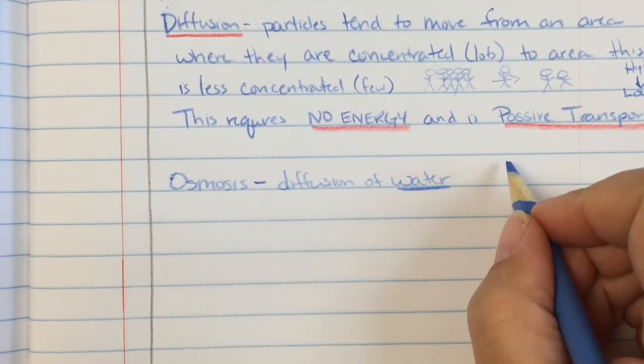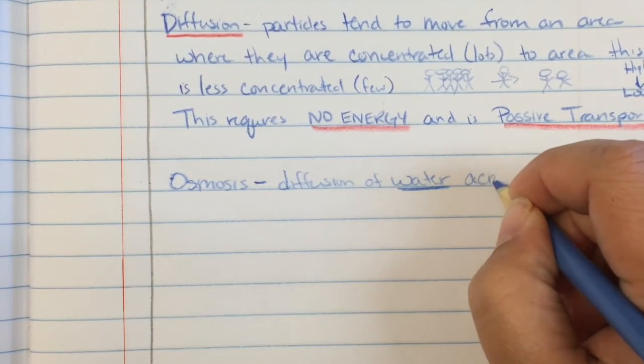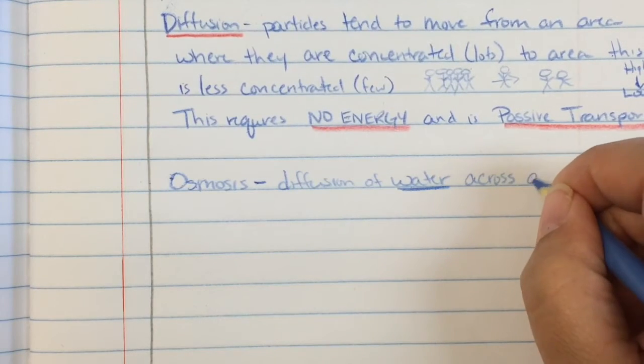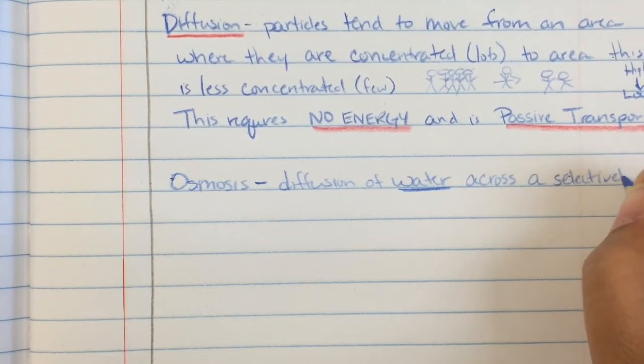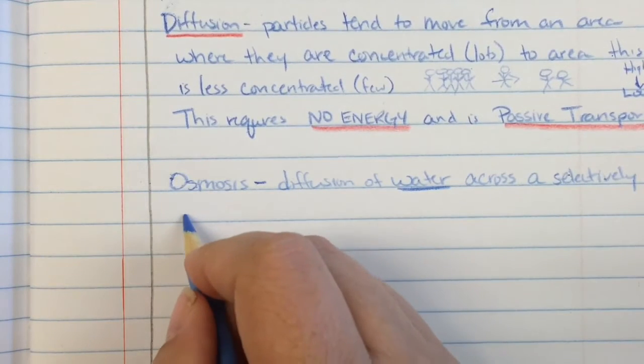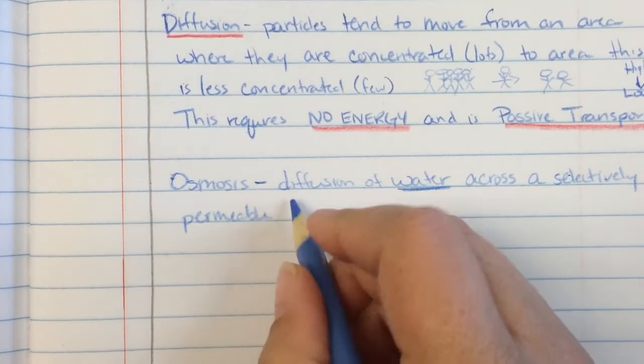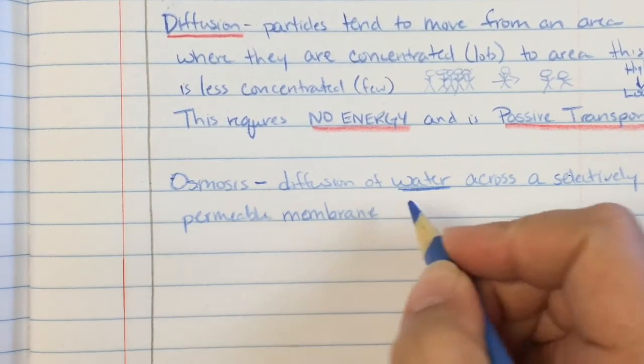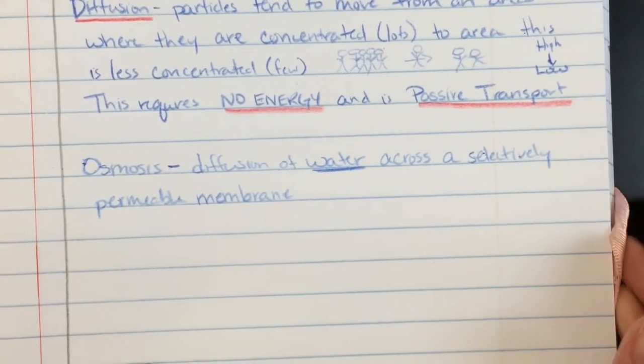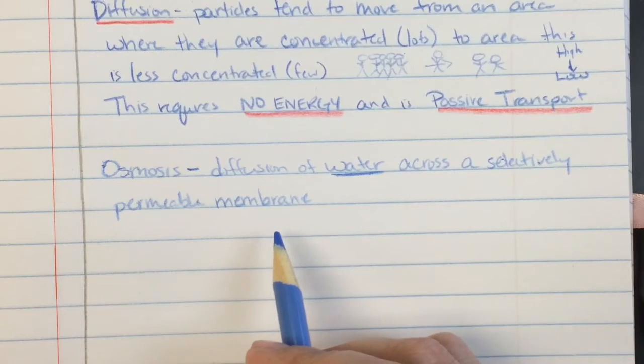Alright, so just water across, here's that word again, selectively permeable membrane. Just got to get used to those big words, guys. I know they're hard. So, sorry, I cut it off a little bit there. So diffusion of water across the selectively permeable membrane.